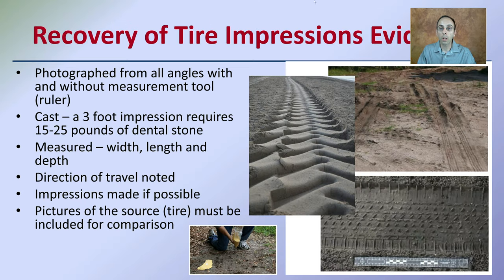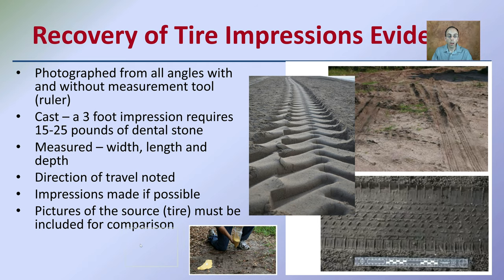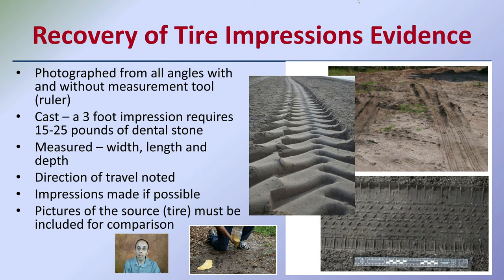To recover this evidence, we want to take photographs from all angles with and without measurement tools and a ruler. If possible, take a cast over about a three-foot impression, which requires about 15 to 25 pounds of dental stone to capture the details. We want to measure the width, length, and depth, and note the direction of travel. Impressions should be made if possible, but pictures of the source tire must be included for comparison to determine whether the suspect's tires could have made the impressions found at the crime scene.